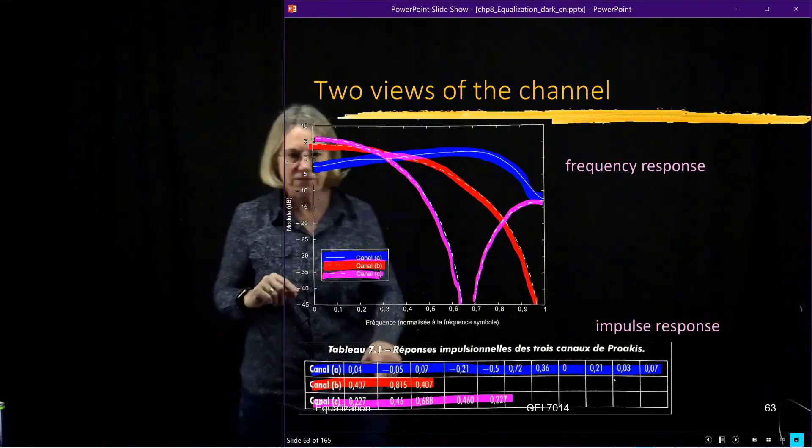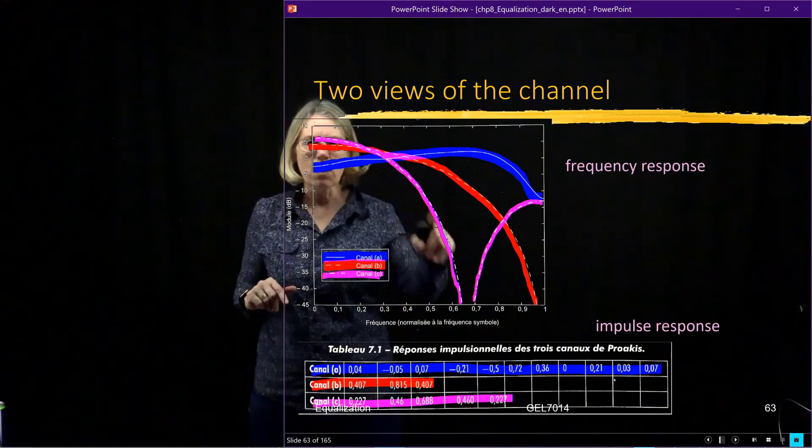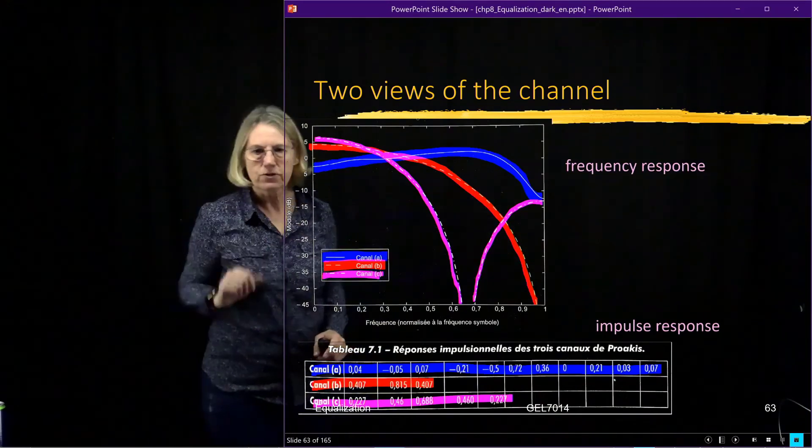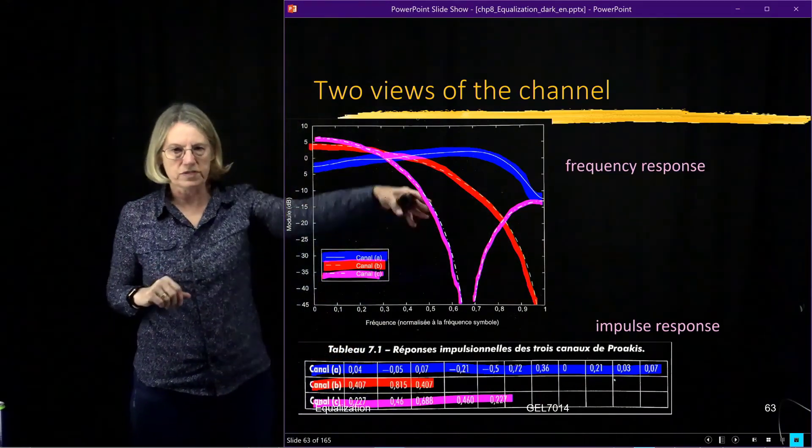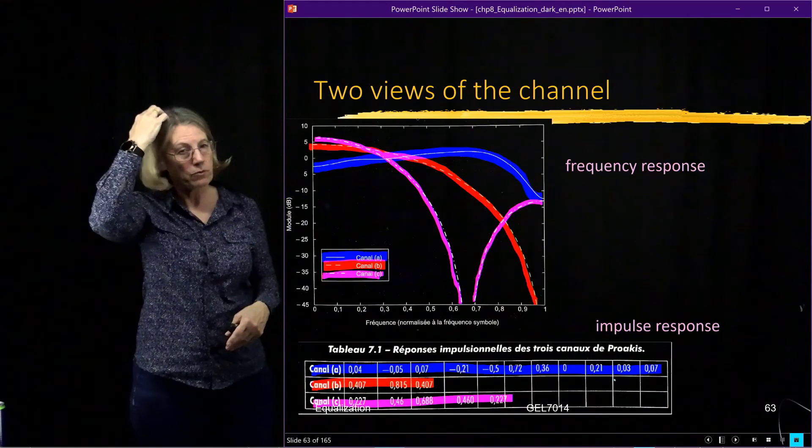Red looks a little better but it also goes—this null is maybe just as deep as this one. When I'm looking here at the impulse response it's hard for me to tell what's going on.